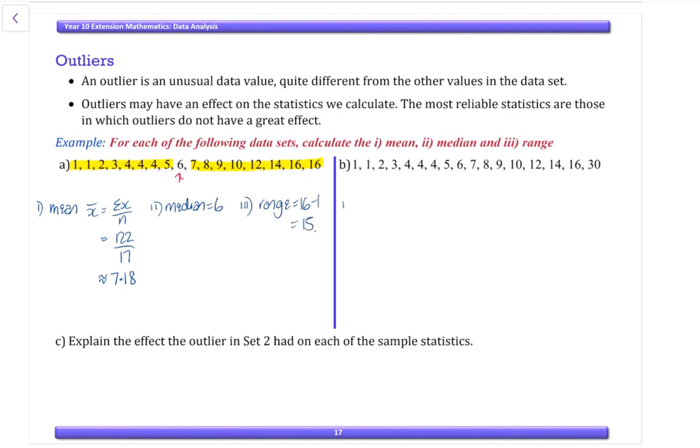Now do the same for the next data set. Mean is equal to the sum of x over n. So that's 136 over 17, which is 8. Our median is 6. And our range equals 30 minus 1, which is 29.